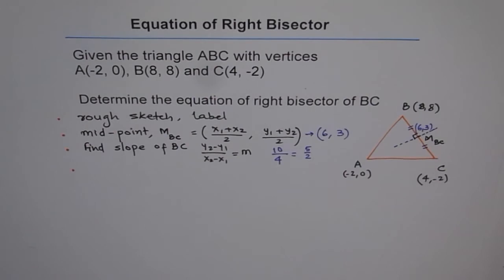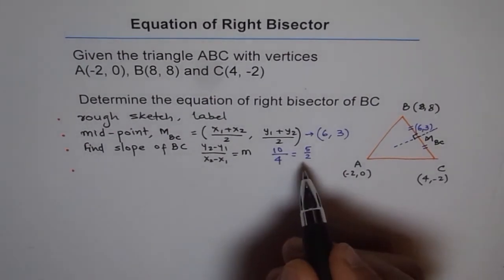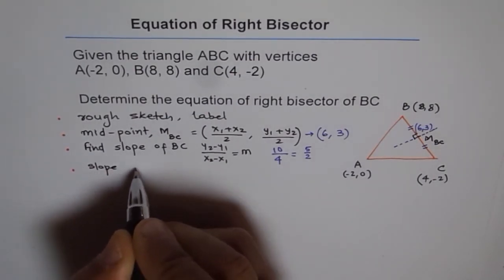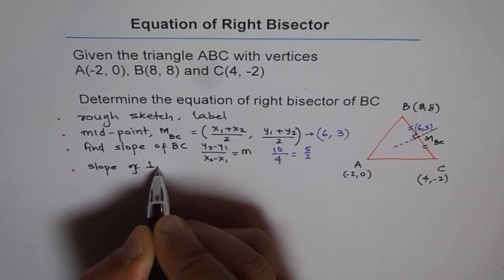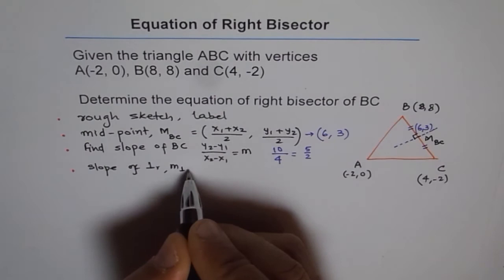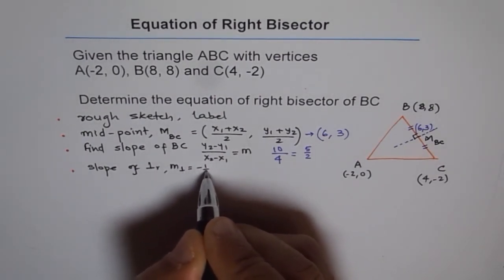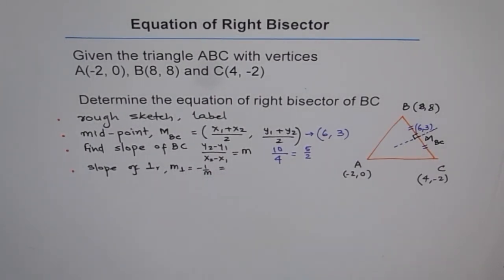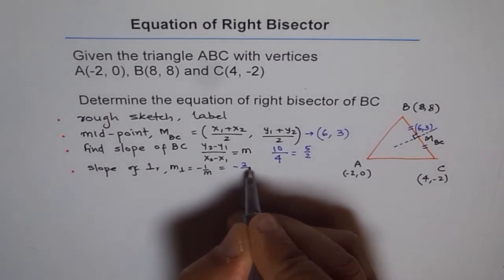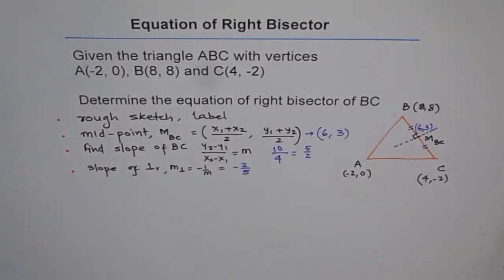So you get the slope of the line. The next step is, when you have slope of line BC, the slope of perpendicular should be negative reciprocal. So we write M perpendicular equals to -1 over M. Negative reciprocal. In this case, it is going to be -2 over 5. So that is going to be our slope of the line.